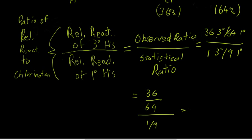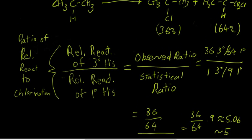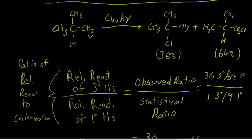So the ratio of these two ratios is 36 over 64 divided by 1/9, which is the same thing as 36 over 64 times nine. That works out to be approximately 5.06 — rounded to five in your chemistry book. What this means is every tertiary hydrogen is five times as likely to be abstracted during radical chlorination as a primary hydrogen.